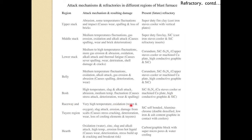The raceway region involves very high temperatures, oxidation, water and slag attack, erosion, damage from escapes, stress cracking, deterioration, wear, loss of cooling elements, and tuyere damage. Silicon carbide self-bonded refractories, alumina-chrome double-densified, and low iron and ash content graphite in contact with the cooler are used. For the hearth, oxidation, zinc, slag, and alkali attack occur; high-temperature erosion during tapping causes high velocity of slag and metal, leading to erosion. Carbon or graphite blocks with super micro-pores and water cooling are required.